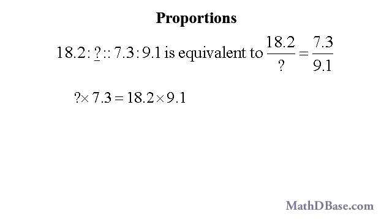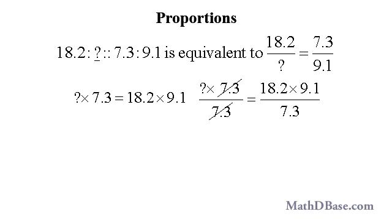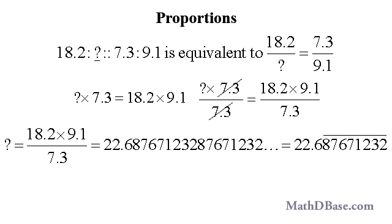So the product of some number times 7.3 is equal to the product of 18.2 and 9.1. If we divide both sides of this equation by 7.3, the unknown number will be left alone on the left side. After multiplying and dividing, the unknown number is equal to the mixed recurring decimal 22.6, with 87671232 as the repeating string of digits.